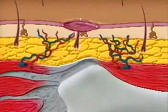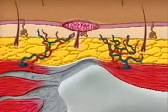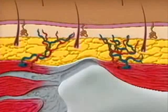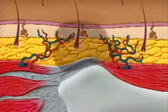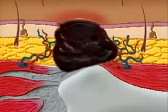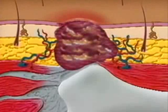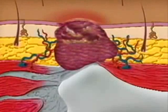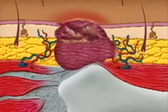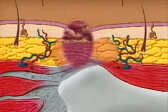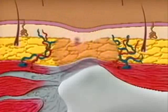In full thickness pressure ulcers, healing occurs by tissue repair, which includes inflammation, cellular migration, proliferation of granulation tissue, wound contraction, resurfacing, collagen remodeling, and maturation.